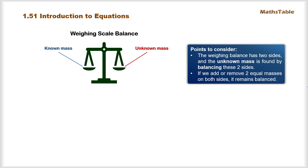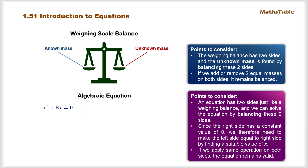Based on these concepts of the weighing scale balance, we can understand the concept of algebraic equations. For example, x² + 8x = 0 is an algebraic equation. Just as we had two sides in the weighing scale balance, the equation also has two sides — a right side and a left side. And just like we balanced the two sides to obtain the unknown mass, we also have to balance the two sides of the equation to find its solution.